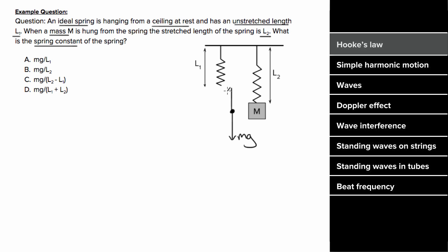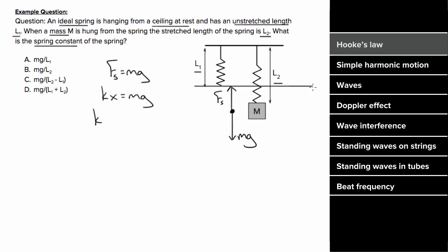The force of gravity has to be balanced by the spring force, meaning the magnitude of the spring force equals the magnitude of the force of gravity. The spring force is always K times X. X is not L1 or L2 — X is how much the spring has been stretched from its equilibrium position, which would be L2 minus L1. Solving for K, we get mg over (L2 minus L1).